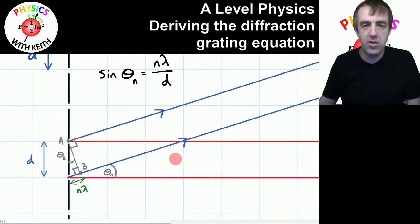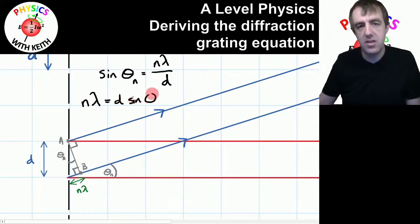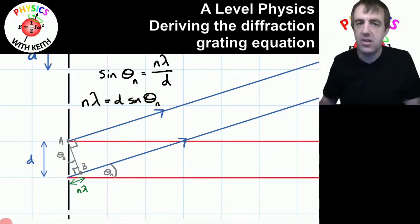So we can rearrange this now to say that n lambda equals d sine theta. And that is the equation for a diffraction grating.